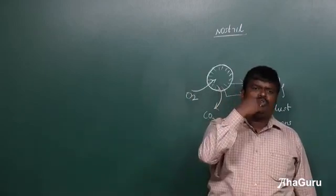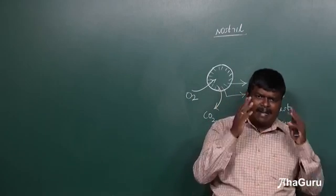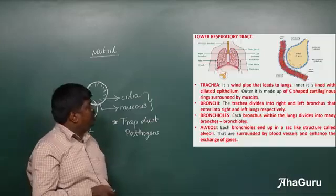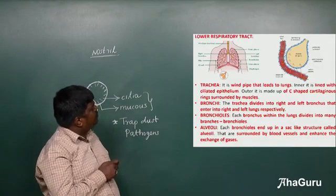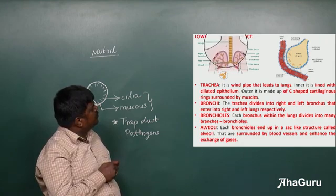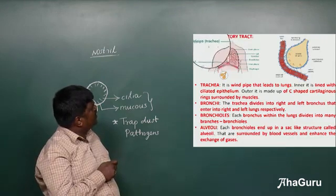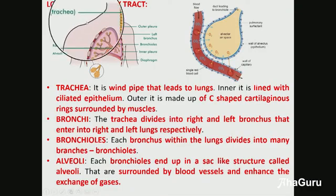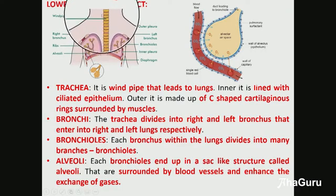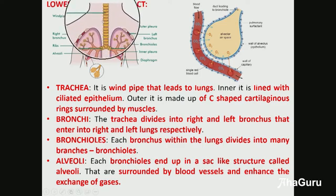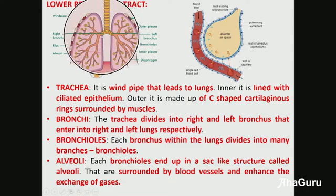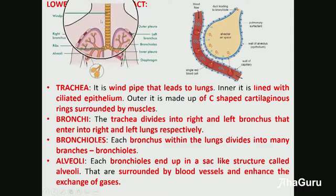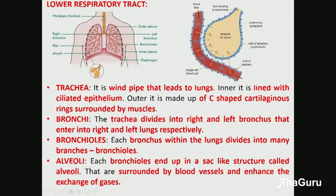From the nostril, oxygen moves to the pharynx and larynx as a passage, reaching the upper respiratory tract. This tract then leads to the trachea, also called the windpipe, which is connected to the lungs.